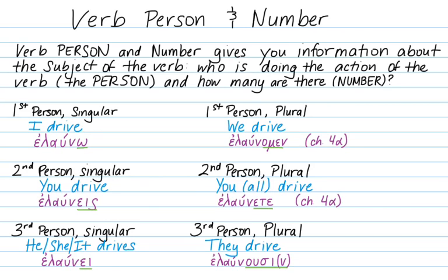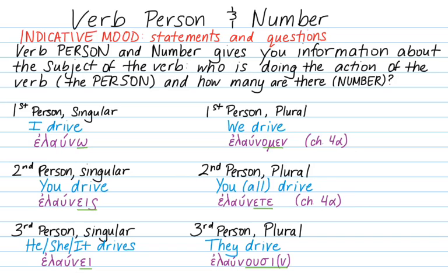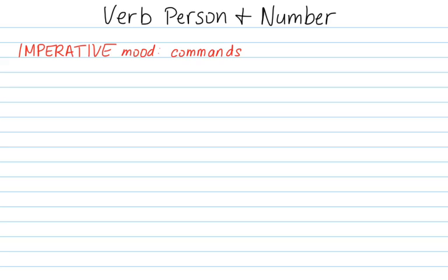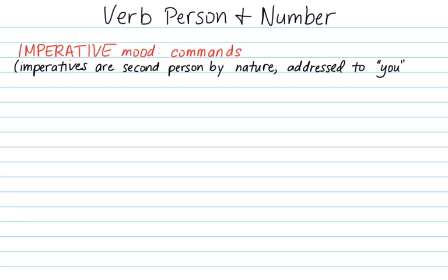The endings we just talked about are all indicative mood. The indicative mood is the mood of the verb that you use to make statements and ask questions. We've also learned forms for the imperative mood. The imperative mood is the form of the verb that you use to make commands. All imperatives are, by nature, second person, because all imperatives are addressed to an understood subject 'you,' that is usually not stated in English nor in Greek.